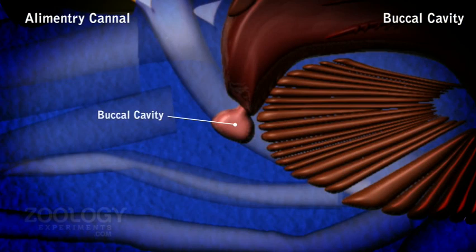The buccal cavity is anteroposteriorly compressed and has a thick cuticular lining which is irregularly folded. The molar processes of mandibles lie opposite each other in the buccal cavity to crush the food between them.